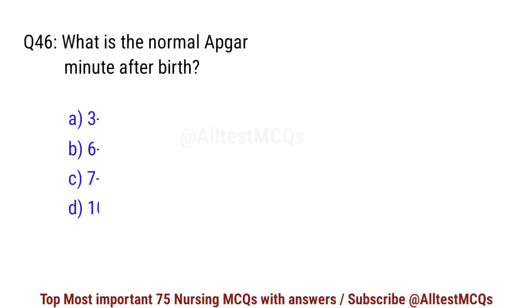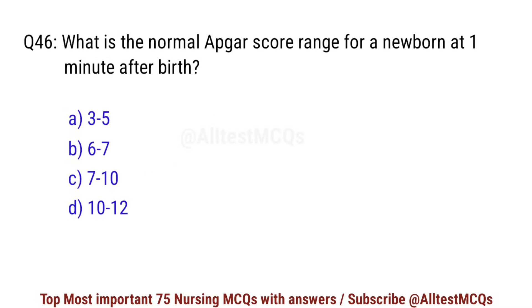Question number 46. What is the normal Apgar score range for a newborn at one minute after birth? Correct option is C: 7 to 10.